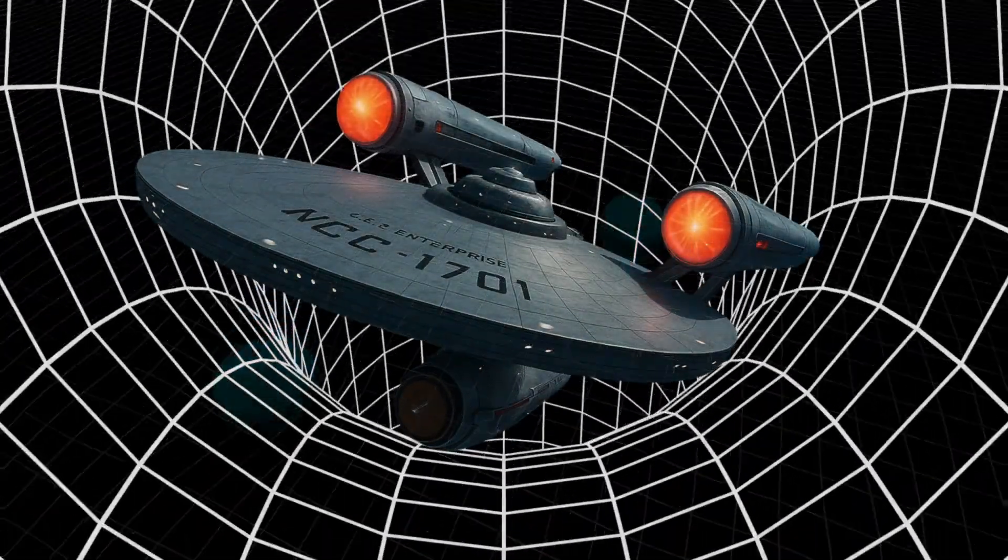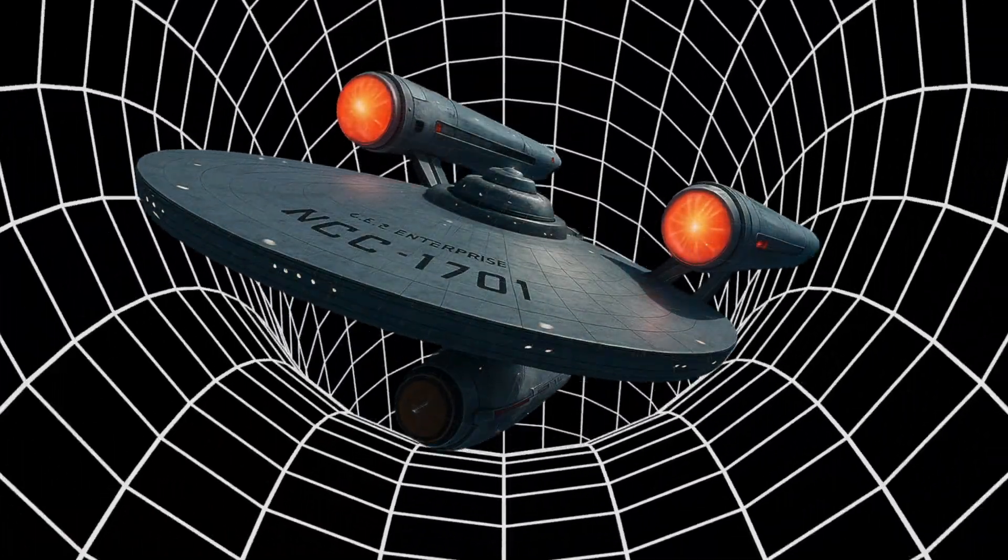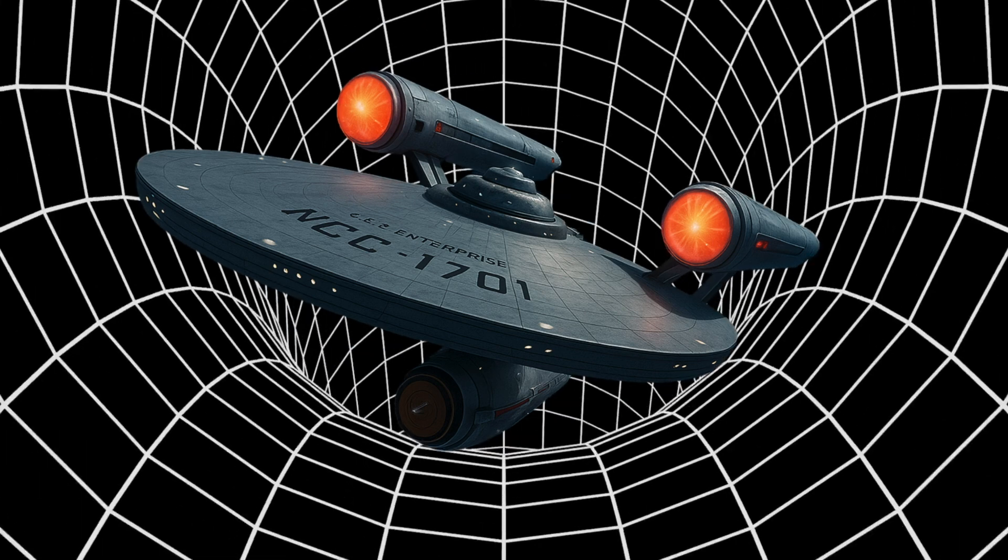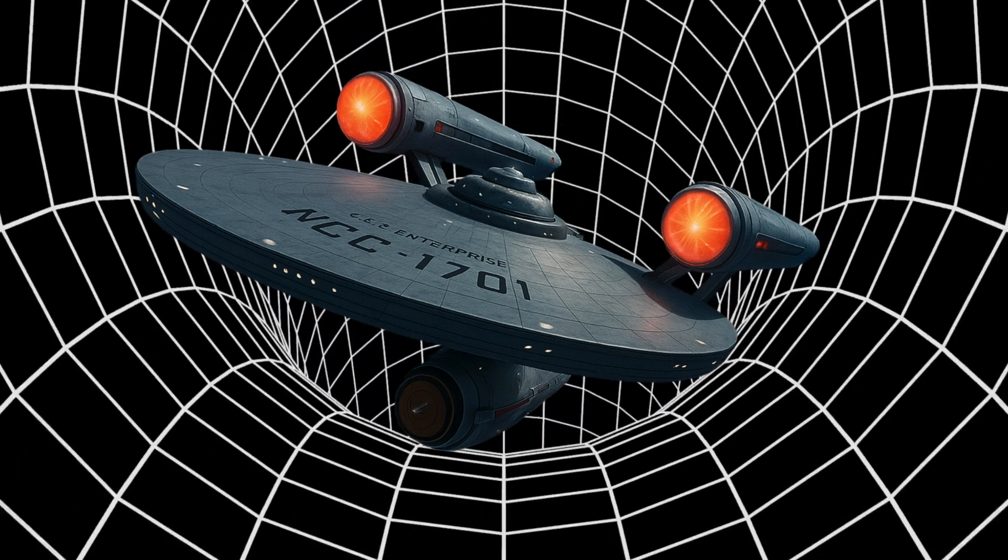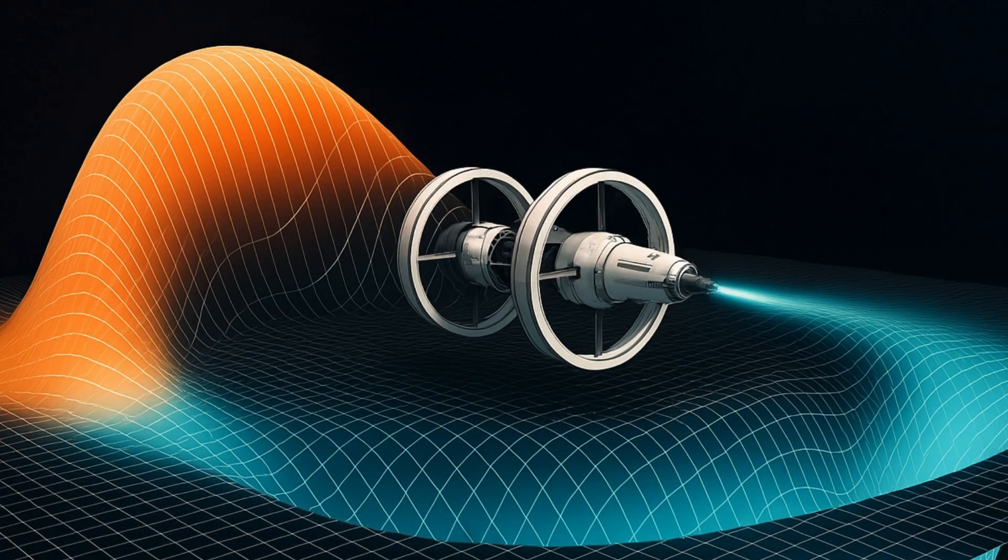That's what a warp drive is based on. It manipulates the space in front of the ship, compressing it, and expands the space behind the ship. The ship stays inside a flat, stable zone between these two extremes.